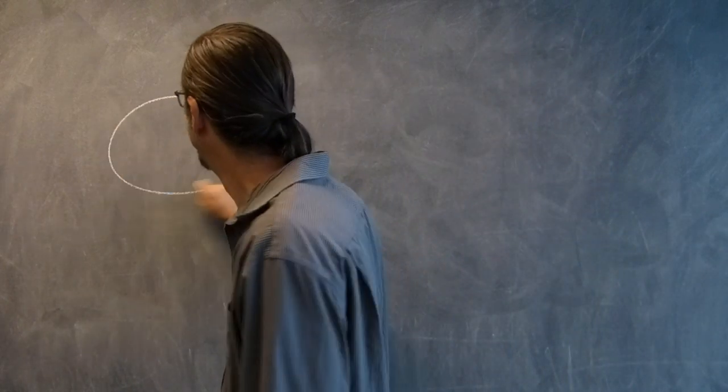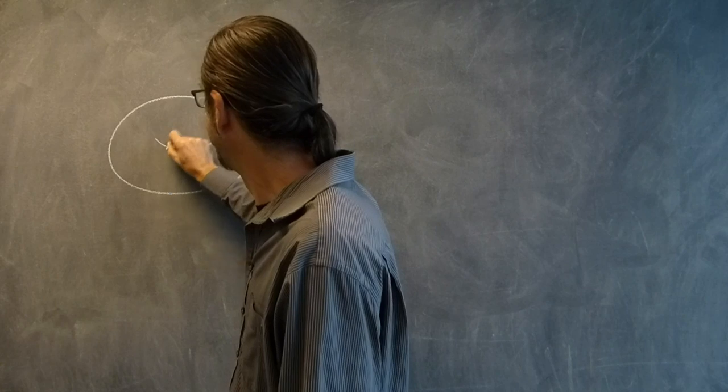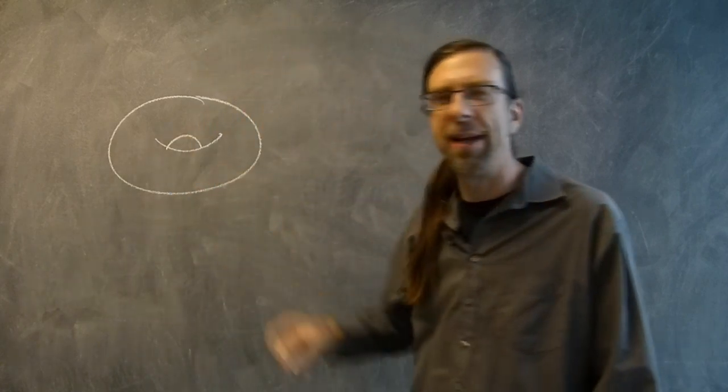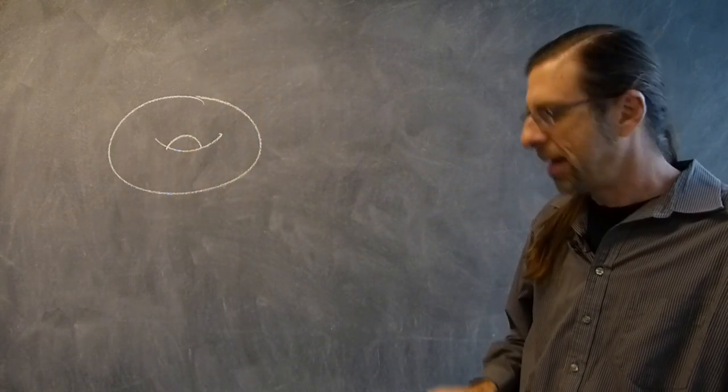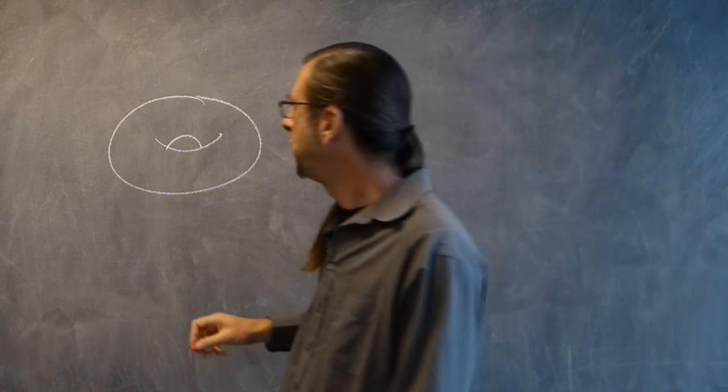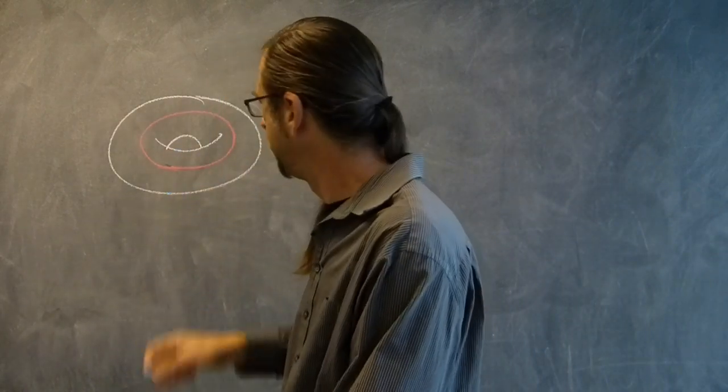First, we need a torus. That's just the surface of a donut. We're going to pretend that that's our whole world. And we're going to decorate it with a red loop and a blue loop.